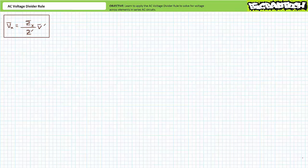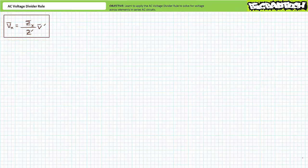Likewise for the AC voltage divider rule. The AC voltage divider rule states that the voltage across the element of interest Vx is equal to the impedance of the element of interest Zx divided by the impedance for that series path Z-prime, times the voltage across that path V-prime. Note that the ratio of Zx over Z-prime must be calculated first, and then one would multiply the resulting proportion times the voltage across that path.